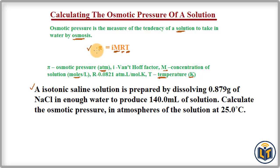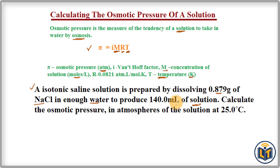Now here is a problem to show how we can use this formula to calculate the osmotic pressure of a solution. The problem states that an isotonic saline solution is prepared by dissolving 0.879 grams of NaCl — the solute — in enough water — the solvent — to produce 140.0 mL of solution.